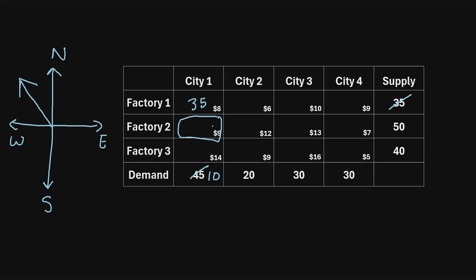Now we look at this cell and ask: can we meet the remaining demand of 10 using the supply from factory two? Factory two has a total supply of 50, so we take 10 of that, write a 10 here, and subtract 10 from 50, leaving 40. The demand for city one is now completely met, so we cross out that last cell. The supply for factory one's row has also been exhausted, so we cross out those cells too.